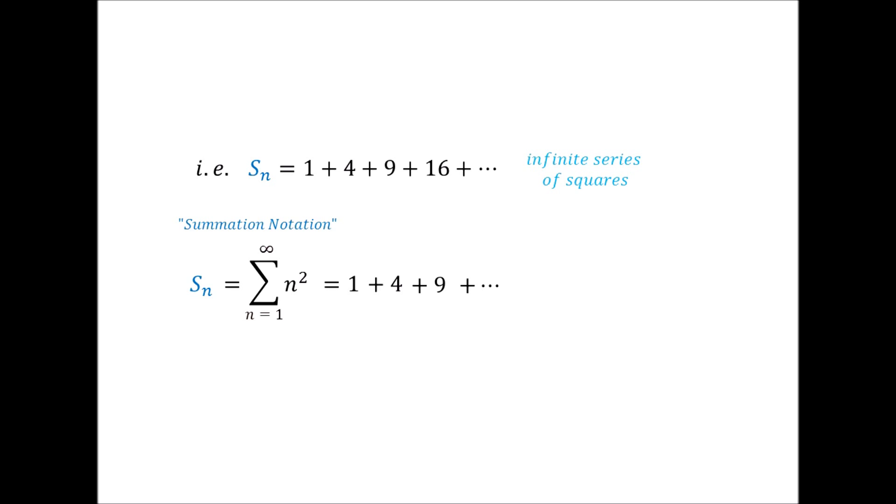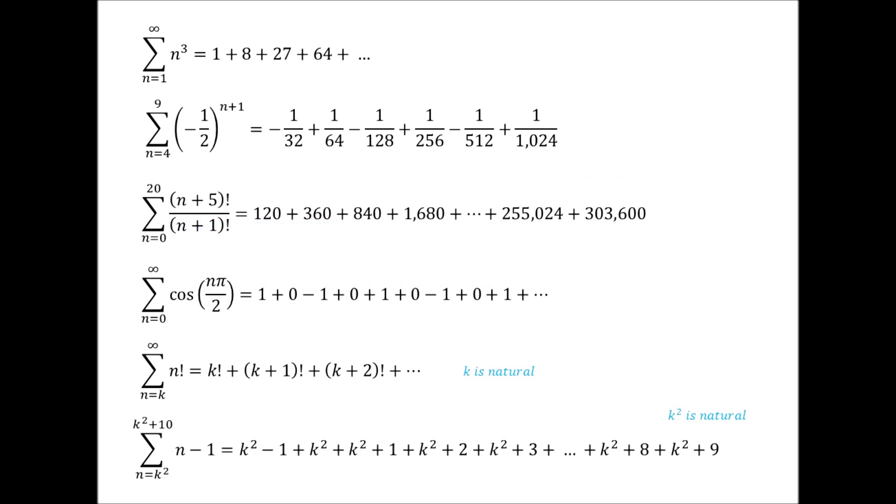Similarly, if we had this, all this would mean is we add terms following the rule 3^n from n = 3 all the way to n = capital N. So we start with 3³ or 27, add 3⁴ or 81, add 3⁵ or 243 and so on, all the way to 3^(n-1) and then 3^n. You should get the idea right now of summation notation. Here are some more examples in case you need to pause and look through it more.